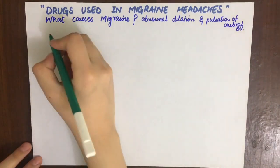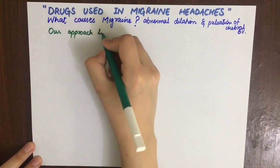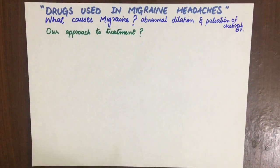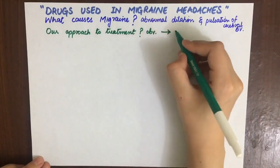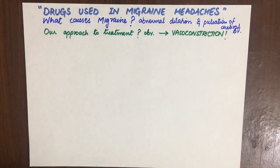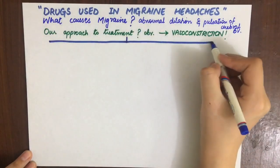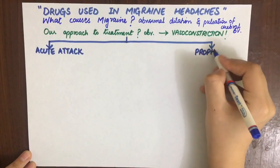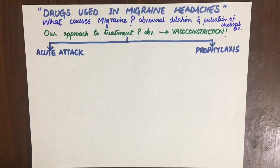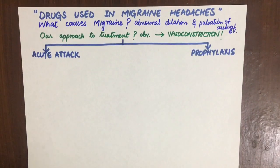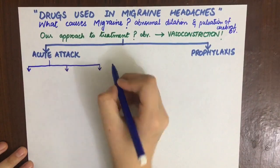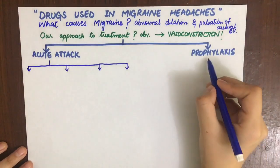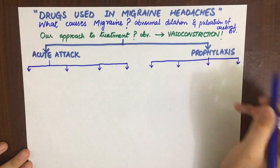In case of migraine headaches, our approach to treatment is to vasoconstrict the cerebral blood vessels. There are many groups of drugs used in migraine headaches, used in two instances. There are drugs used in the acute attack and drugs used for migraine prophylaxis. For the acute attack there are four classes of drugs, and similarly four types of drugs are used for migraine prophylaxis.